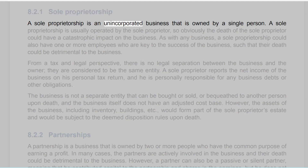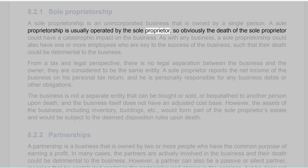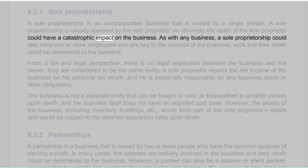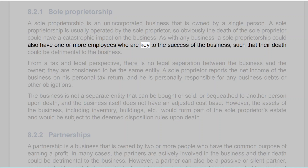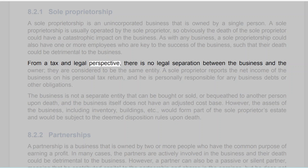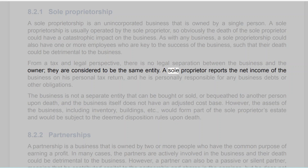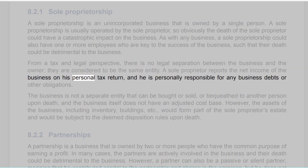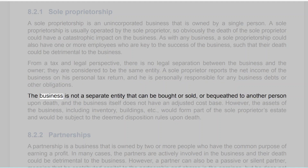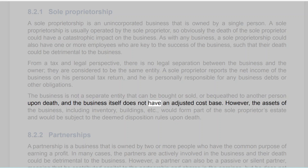8.2.1 Sole Proprietorship. A sole proprietorship is an unincorporated business that is owned by a single person. It is usually operated by the sole proprietor, so obviously the death of the sole proprietor could have a catastrophic impact on the business. A sole proprietorship could also have one or more employees who are key to the success of the business, such that their death could be detrimental. From a tax and legal perspective, there is no legal separation between the business and the owner — they are considered to be the same entity. A sole proprietor reports the net income of the business on his personal tax return and is personally responsible for any business debts or other obligations. The business is not a separate entity that can be bought, sold, or bequeathed to another person upon death, and the business itself does not have an adjusted cost base.